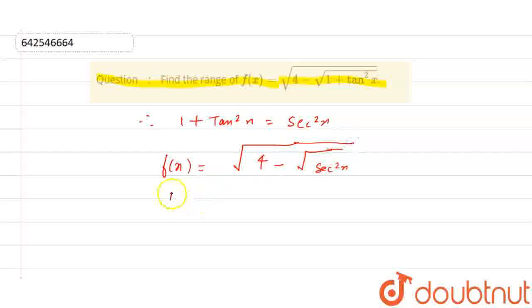So now this will become f(x) is equal to, if we open this square root we can get 4 minus mod of sec x.